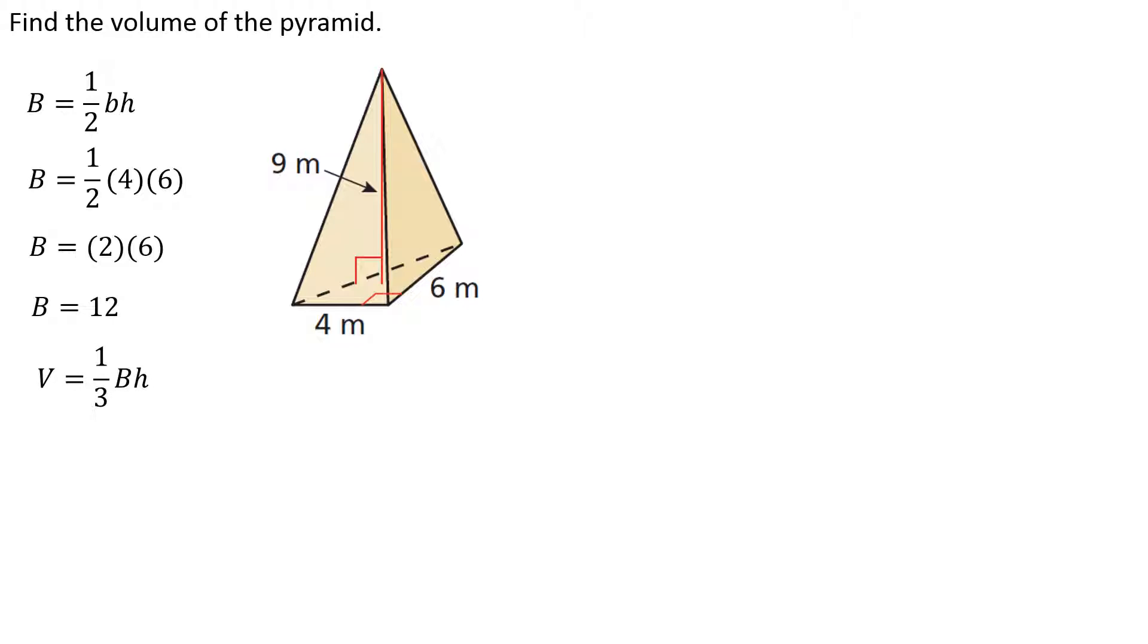So volume is one-third area of the base times the height. Now, that's a capital B, so I'm not talking about the base of the triangle - I'm talking about the area of the base of the pyramid. So we'll use the value of 12 that we just found a moment ago. And now again, this time that h for height refers to the height of the pyramid, not the height of the triangle. So I'm gonna use that 9.